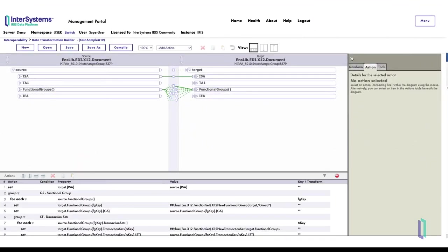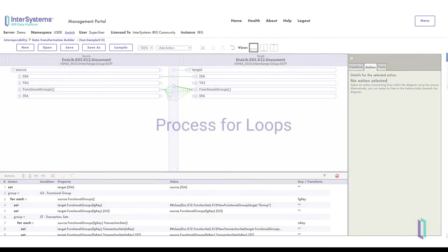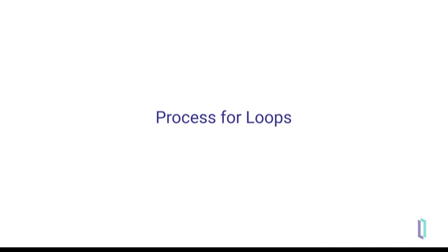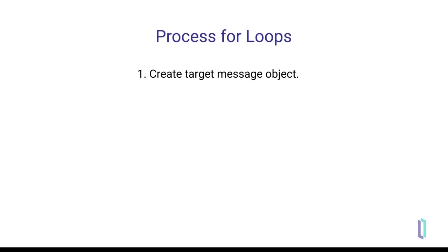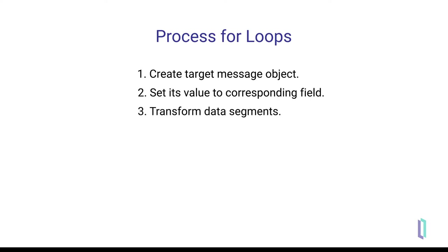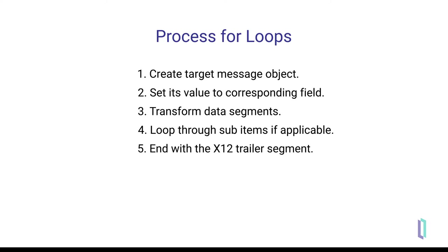The next part of this video shows how you can build transformations using the DTL editor — an overview of this process, followed by a full demonstration. Let's look at the general steps for instantiating and populating the target message object at each level of nested loops. First, create the object in the target message. For auditing purposes, the DTL instantiates a new X12 message to retain the original fields. Second, set its value equal to the corresponding field in the source message. Third, perform any transformations on that value. Then loop through all the sub-items. Last, use the X12 functions in the DTL to complete the trailer segment.